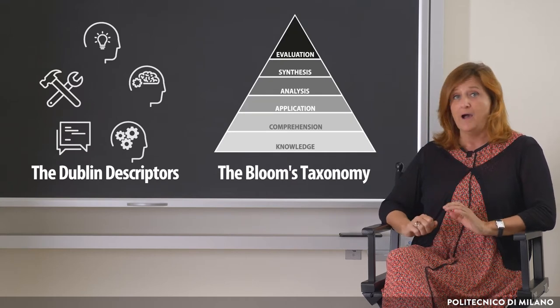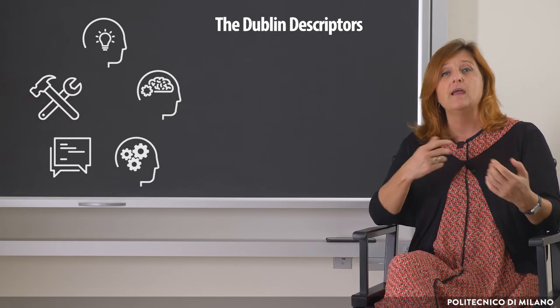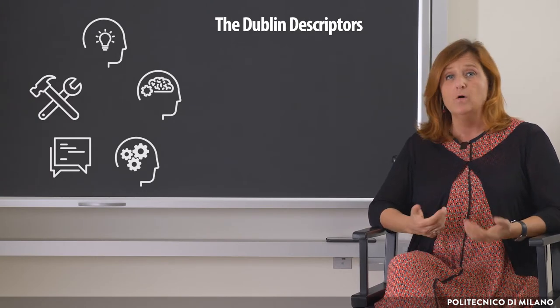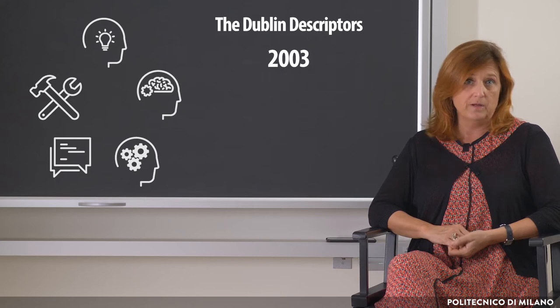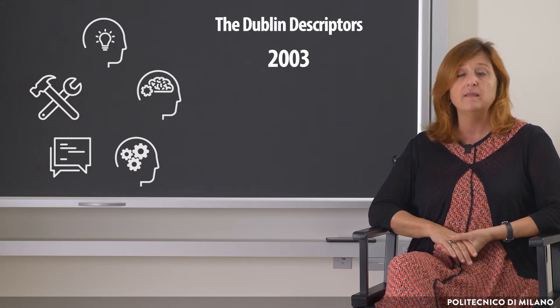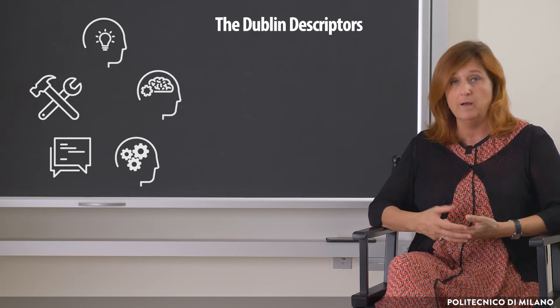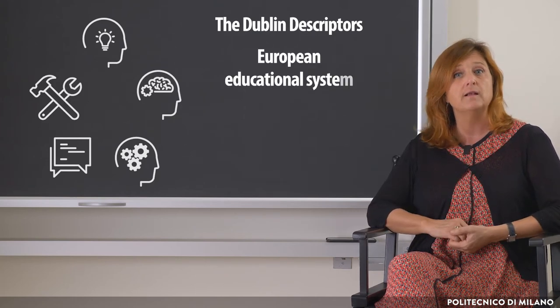Let's start by exploring the Dublin Descriptors. The Dublin Descriptors take their name from the city of Dublin, where they were presented in 2003. They aim to facilitate the definition of the intended learning outcomes at the end of a course, so as to make them more conforming with other similar courses within the European educational system. But in which way do the intended learning outcomes need to be defined to make the learning paths within the European educational system comparable with each other?